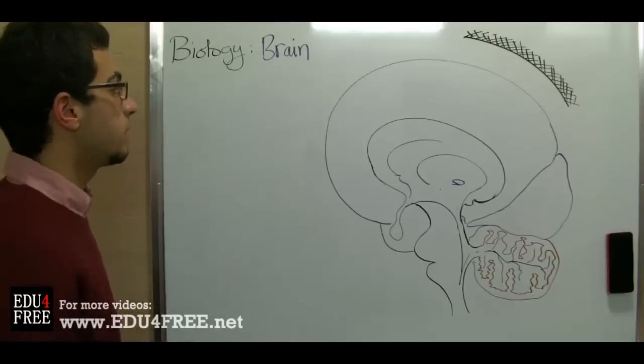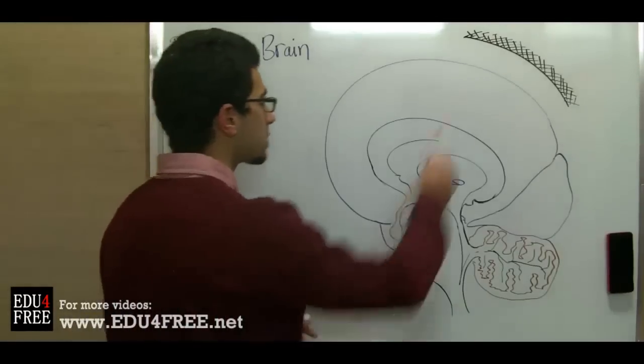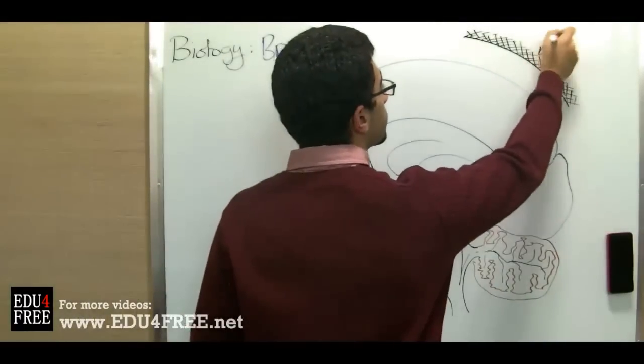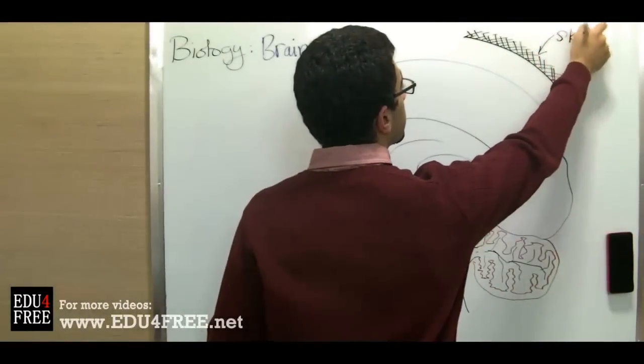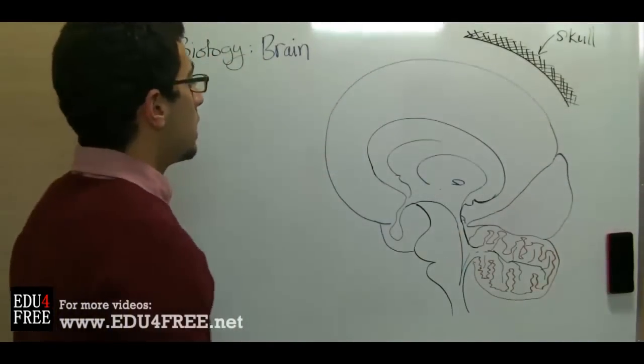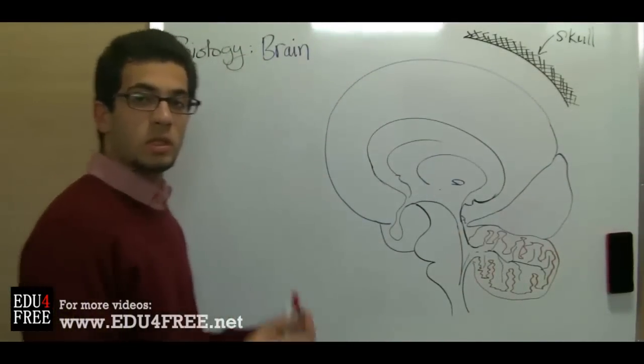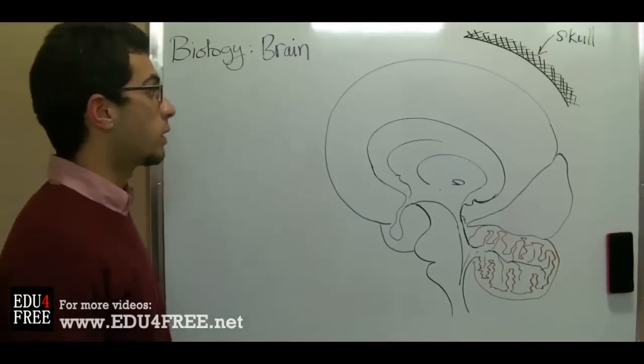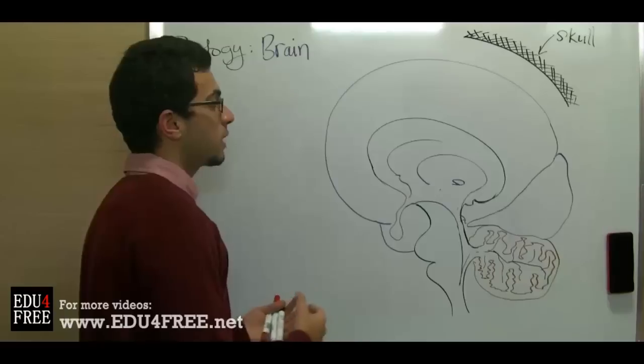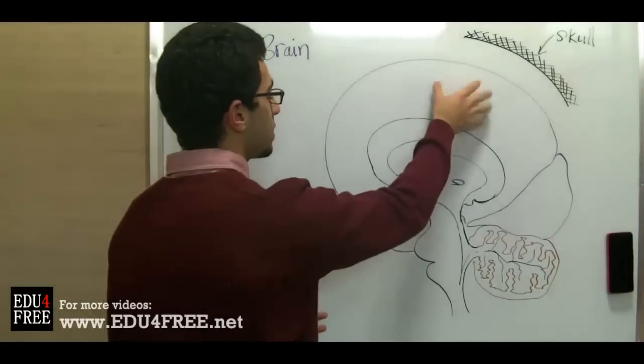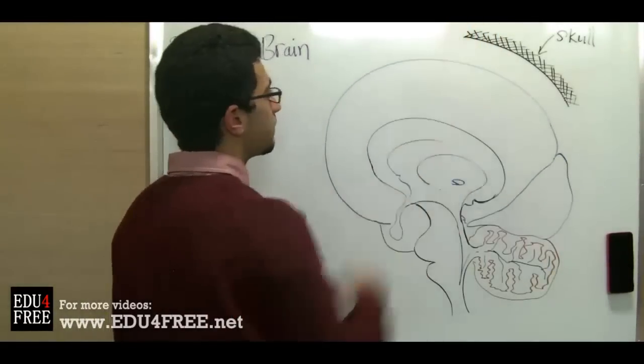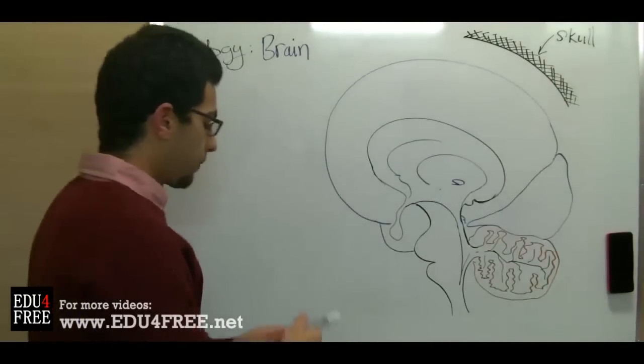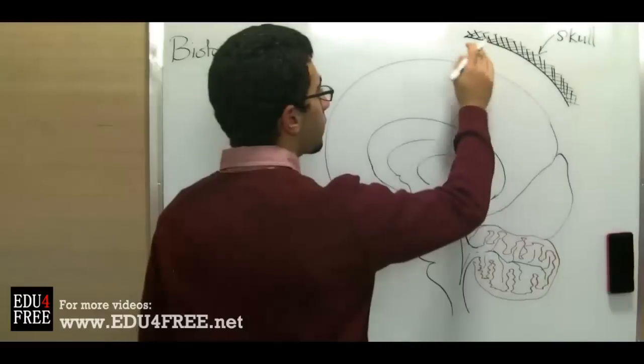Now inside the skull, there are membranes which surround the central nervous system. They surround the brain and the spinal cord so that they can prevent the friction between the central nervous system and the bones. In the skull there are three meninges.